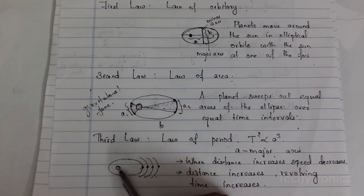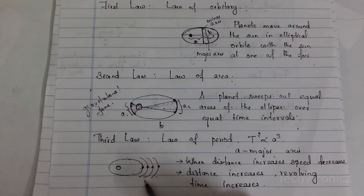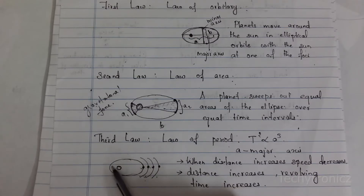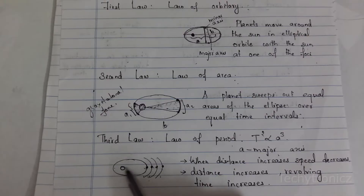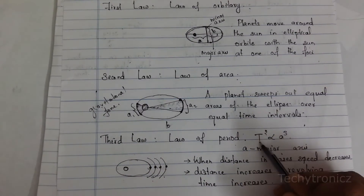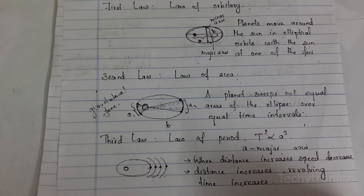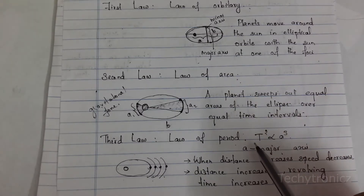As the distance increases, the rotation speed is slow. When the distance increases, the speed slows down and the rotation time increases. So as the major axis (distance) increases, the time period increases — that is, T² is directly proportional to A³. These are the three laws of Kepler.